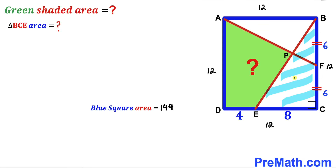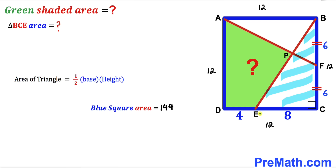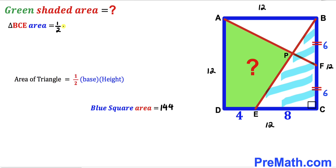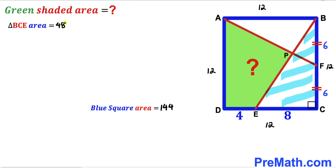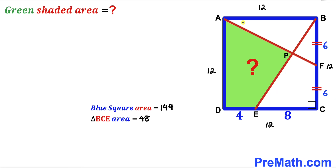Now let's calculate the area of right triangle BCE. Using the formula: area equals one-half times base times height. The base of this triangle is 8 units and the height is 12, so the area of triangle BCE is one-half times 8 times 12, which gives us 48 square units.